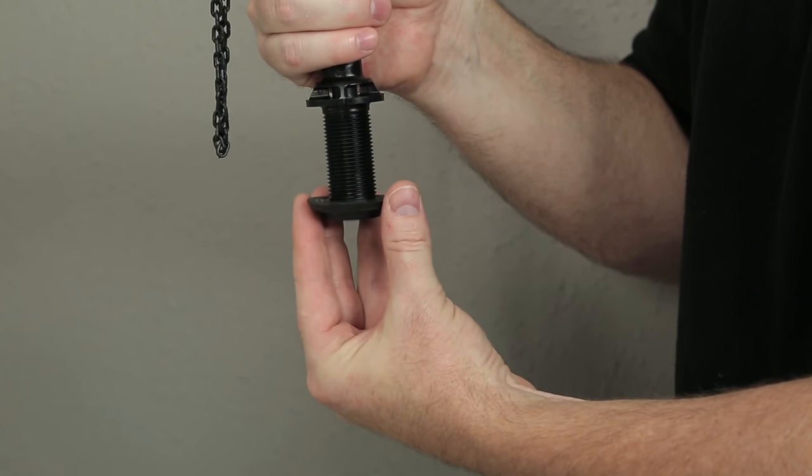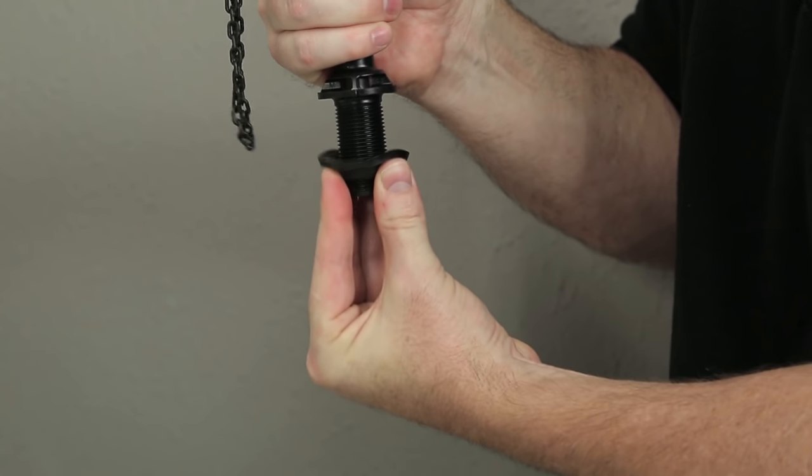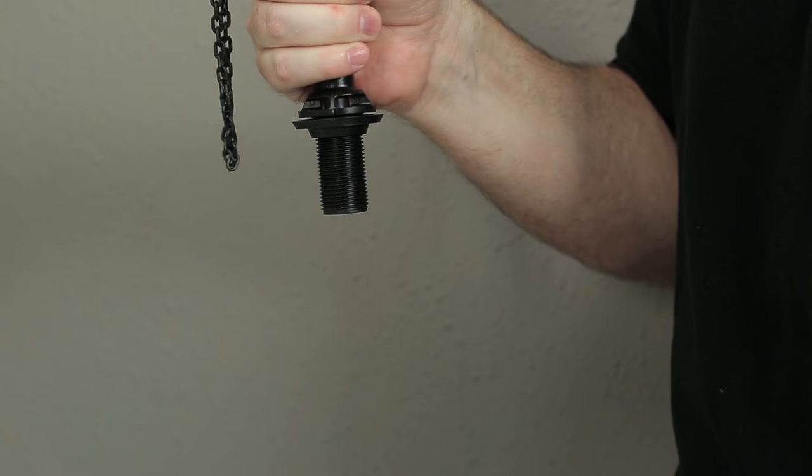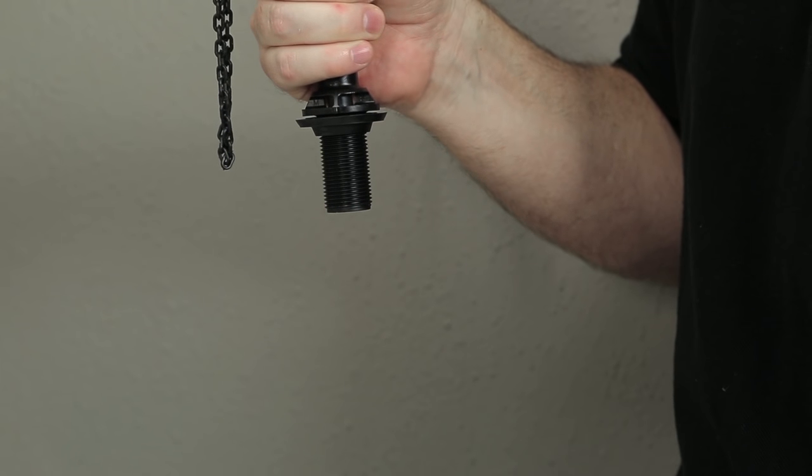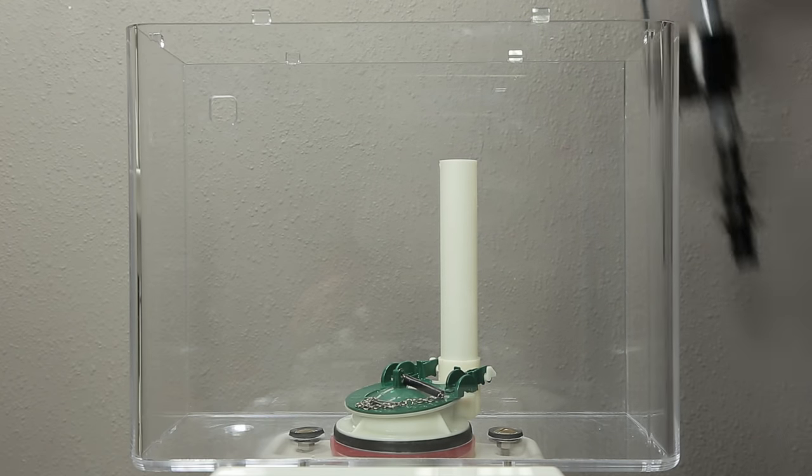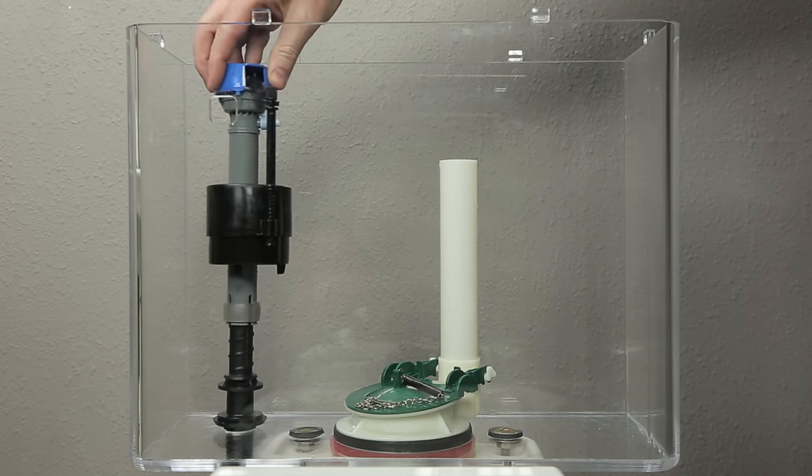Place the shank washer onto the threaded shank of the fill valve with the flat side up. Push the shank washer all the way up the threaded shank so that it's flush against the flange. Measure the height of the overflow pipe. Place the fill valve into the tank but do not secure it with the lock nut.